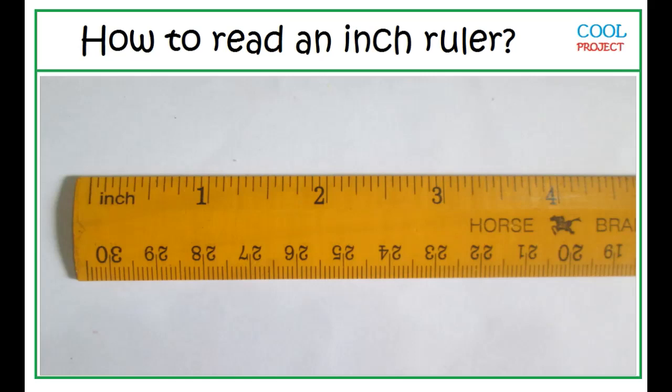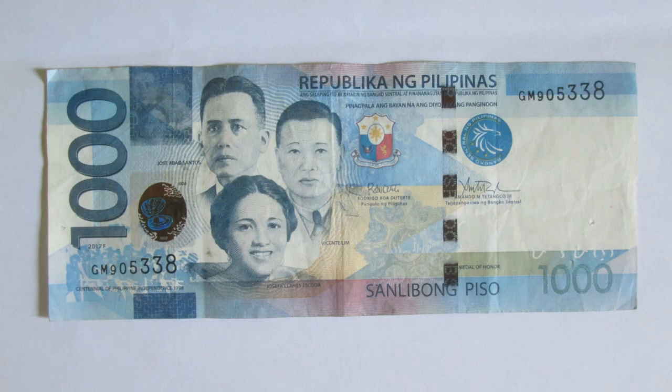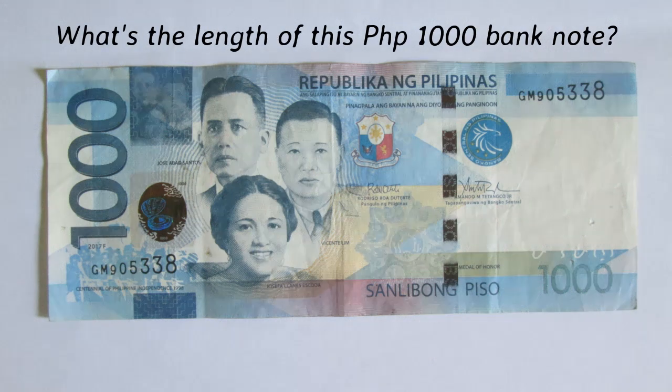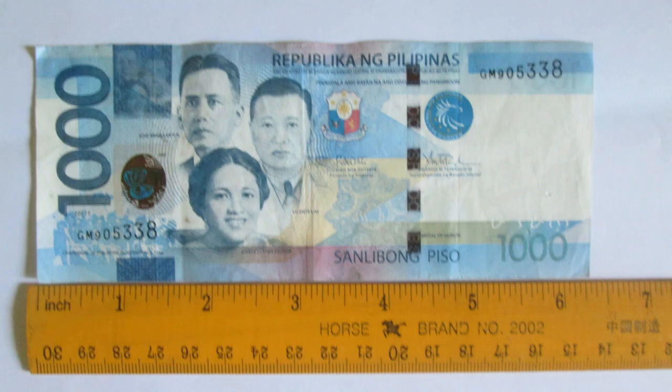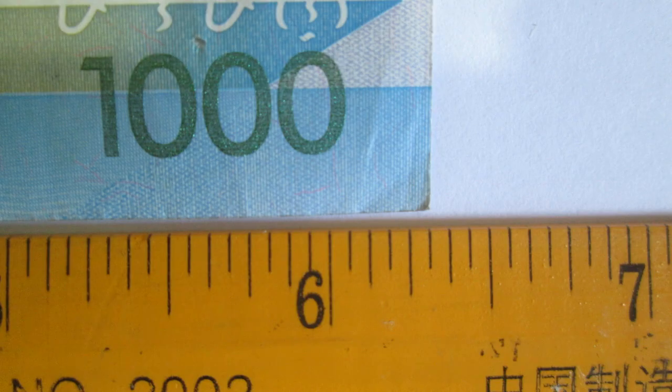Let's measure using an inch ruler. What's the length of this banknote? To find the length, compare it with an inch ruler. To measure, start from the first mark, which is zero, then read the last mark. What is the length?